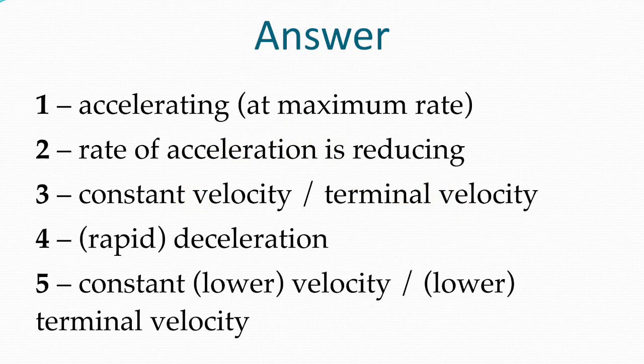Point 1 was accelerating at its maximum rate. Point 2, the rate of acceleration is reducing. Point 3, it is travelling at constant velocity or terminal velocity. Point 4, it is rapidly slowing down or decelerating, and point 5, it is travelling at a constant lower velocity or terminal velocity again.